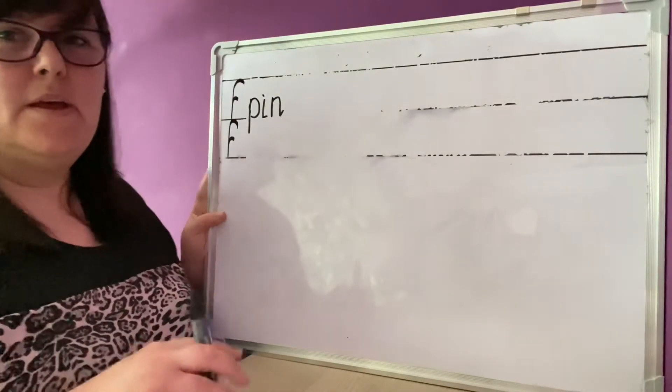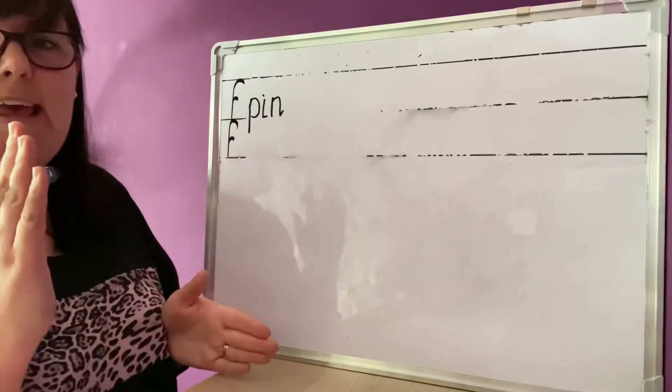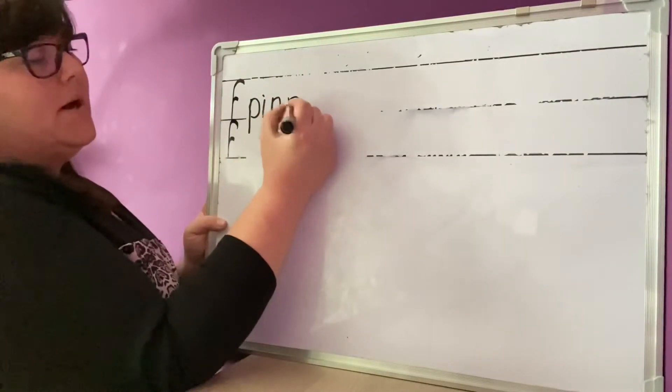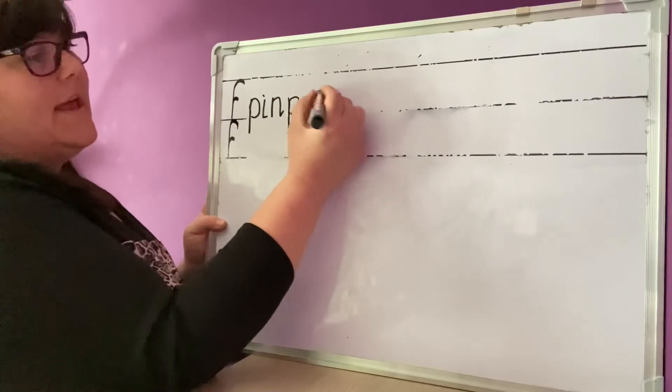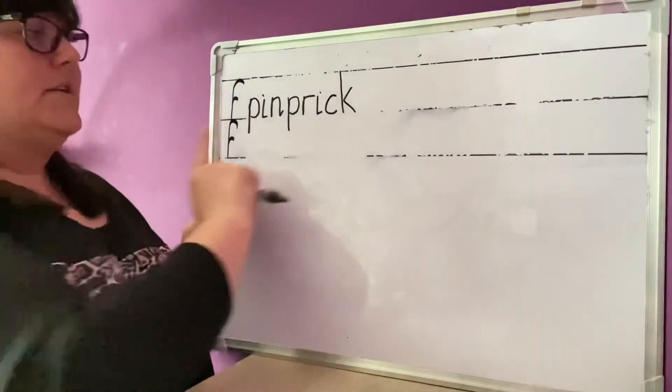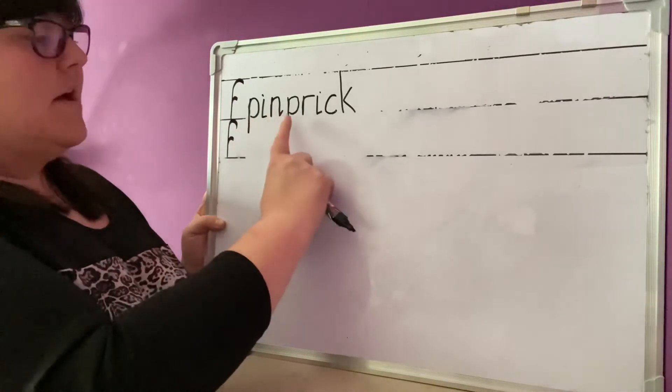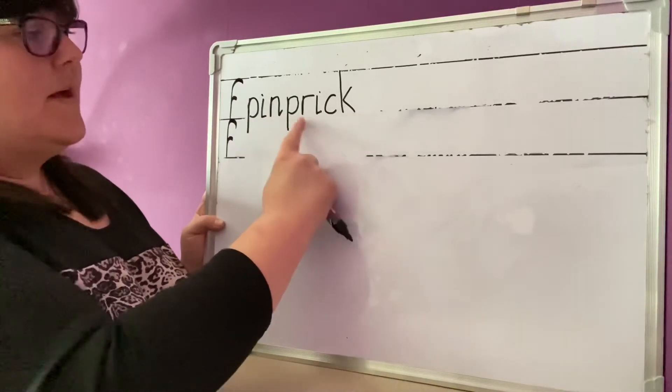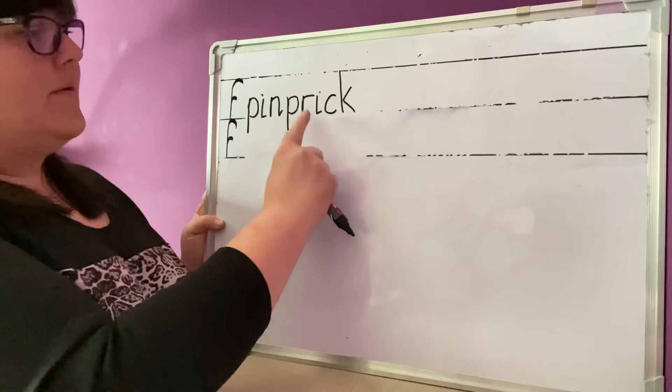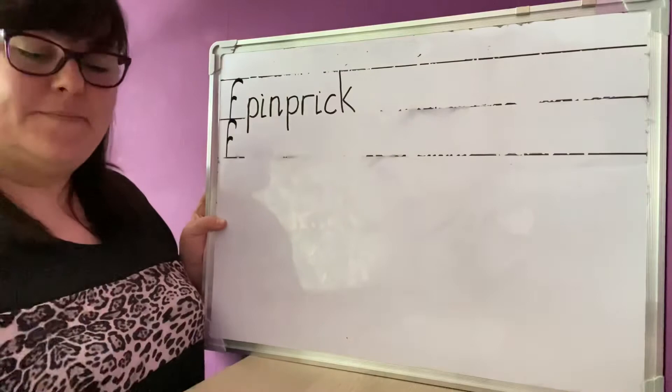Segment it. Pin, p-r-i-c-k. Prick. Well done. P-r-i-c-k. Now let's say the sounds and read the whole word. Are you ready? P-i-n. Pin. P-r-i-c-k. Prick. And again, all together. P-i-n, p-r-i-c-k. Pinprick. Well done. Okay.